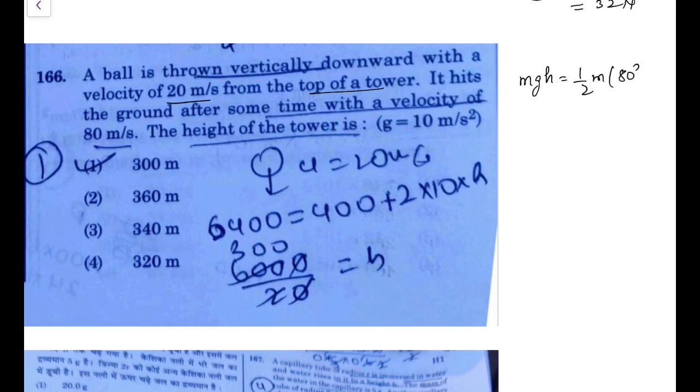Energy: half m times 80 square minus 20 square. You can write it so m and m goes, so h would be 80 square, that is 6400 minus 400 upon 2 into g which is 10, so 20. This is 6000 by 20, that comes out as 300 meters.